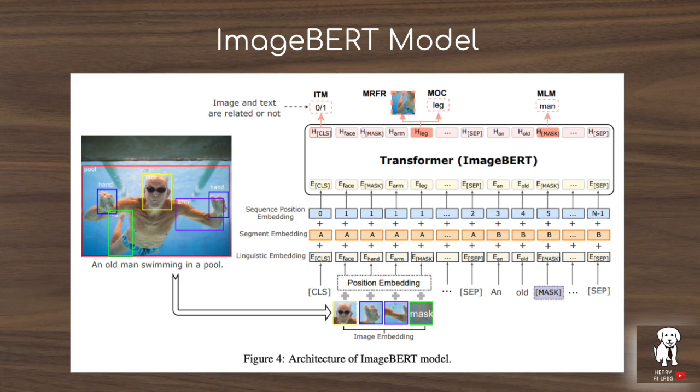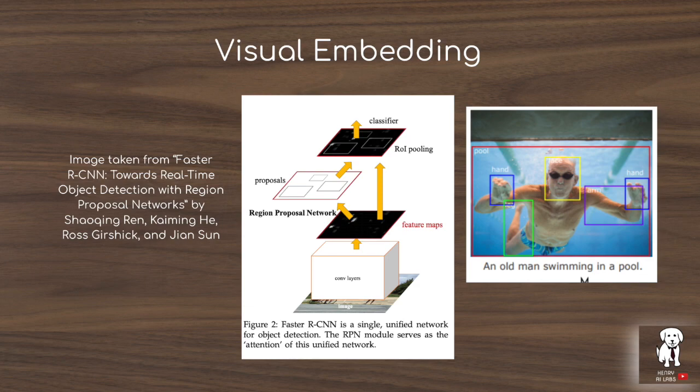ImageBERT also includes a unifying task of image-text similarity that requires attention to look at both the visual sequence and the text sequence. Vision-language tasks include applications like taking a text query and finding the best matching image from a database, or vice versa — finding the best matching text for a given image, such as in image captioning. They also include visual question answering and visual common sense reasoning, amongst others.